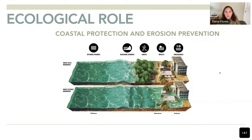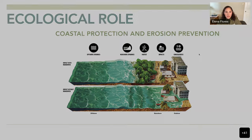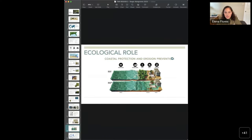Mangroves also provide coastal protection and erosion prevention. In this diagram, I can show you how the coast with mangroves versus without mangroves has an impact — specifically why not having mangroves increases the risk of inundation and storms. I have a small video that replicates what we see with mangroves.